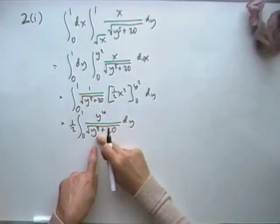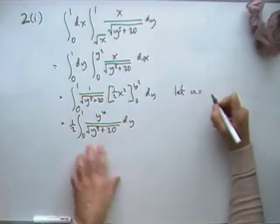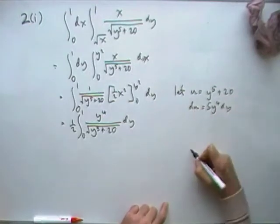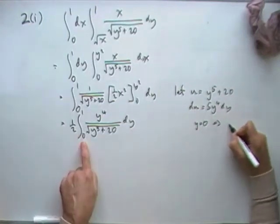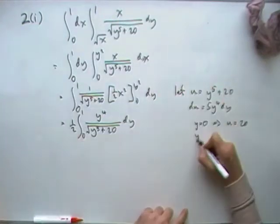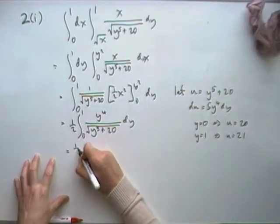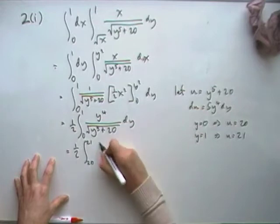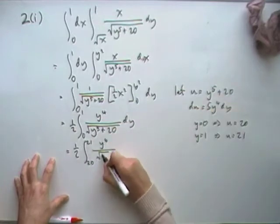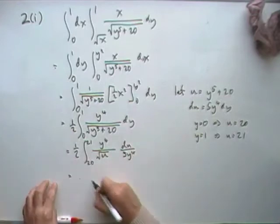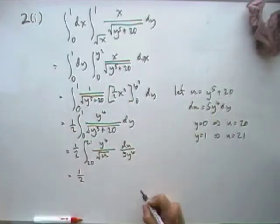Then, the top is the derivative of the bottom, so you can use a substitution. Just let u equal that whole part inside the square root. So the derivative is 5y to the 4th. That will cancel out the top. Change the limits while we're at it. So that's going to go up to u equals 21. So now I've got half of going from 20 to 21. y to the 4th, that's just the square root of u. That'll go back up quite easily.